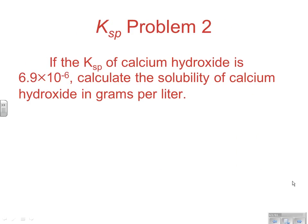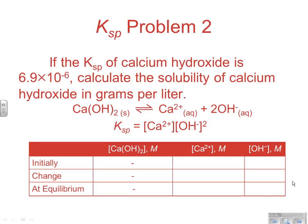If the Ksp for calcium hydroxide is 6.9 × 10⁻⁶, calculate the solubility of calcium hydroxide in grams per liter. We always start with the reaction so we can see what the solubility expression is — Ksp equals the concentration of Ca²⁺ times the concentration of OH⁻ squared. Initially we have 100% calcium hydroxide solid and zero amounts of the two ions. When it dissolves, for every one calcium hydroxide, we get one Ca²⁺, so calcium goes up by X, and hydroxide goes up by 2X.